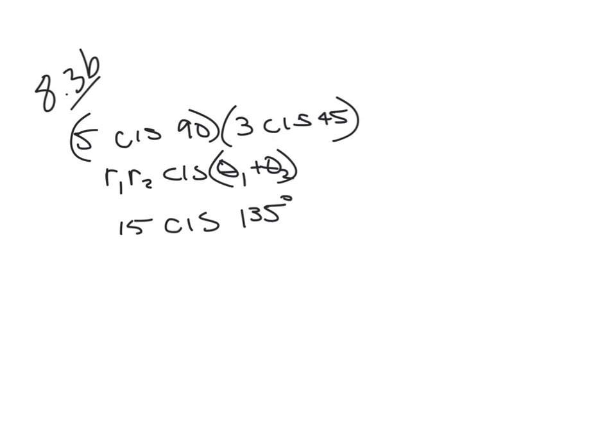So we've got 15 cis (90 plus 45) which is 135 degrees. Now let's take this and spread it out as 15 times the cosine of 135 plus i sine of 135 degrees.